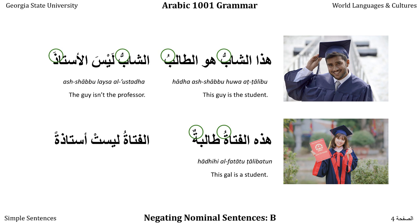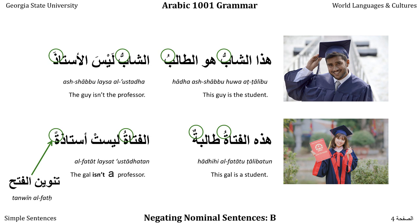However, if I say she's not the professor — 'al-Fatat Leysat Ustadhatan' — where Leysat is the feminine form of Leysa, al-Fatat stays in the Marfu case as the Mubtada, but Ustadha gets a new character. I change from Tanwina al-Dhamm to Tanwina al-Fatah, pronounced 'n,' so I say 'Ustadhatan.' It is indefinite so it gets a double character, and it is in the Mansoub case — the third of the three cases — because it follows Leysa.